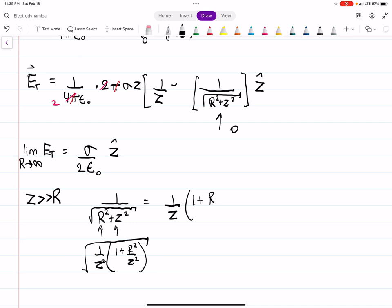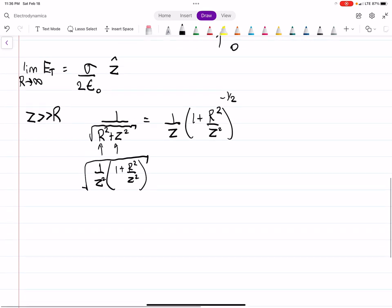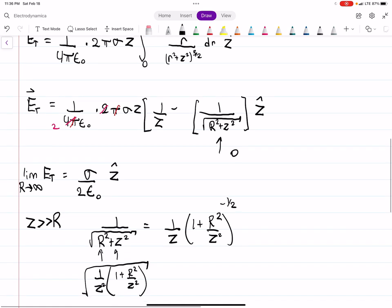And then factoring out the 1 over z squared from that, I'll be left with this. And I'm also going to move my exponent up to the top here, and I can do that just by changing the sign, of course. And now what I can do is a binomial approximation for this.